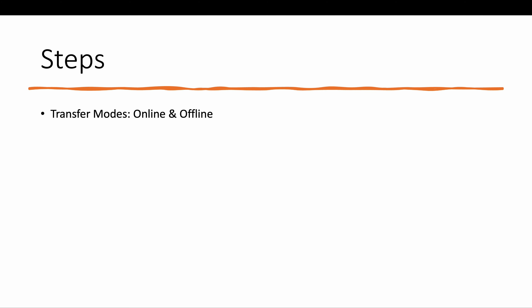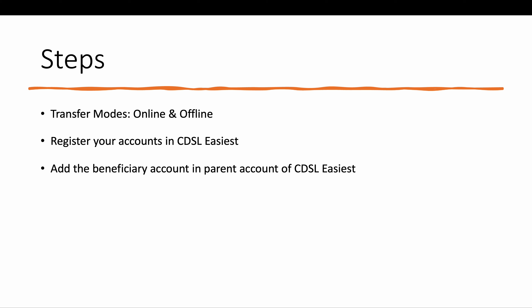Since my accounts are in Zerodha, Zerodha provides two capabilities: online and offline. I preferred online because it's the easiest. To do the online process, you need to register all your demat accounts in CDSL Easiest. Once registration is complete, you add the beneficiary details in the parent account. The parent account is the one you are transferring holdings from. In the CDSL Easiest of the parent account, you need to add the beneficiary's 16-digit demat account number.